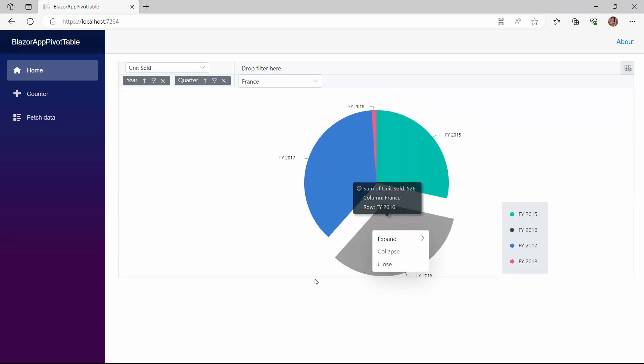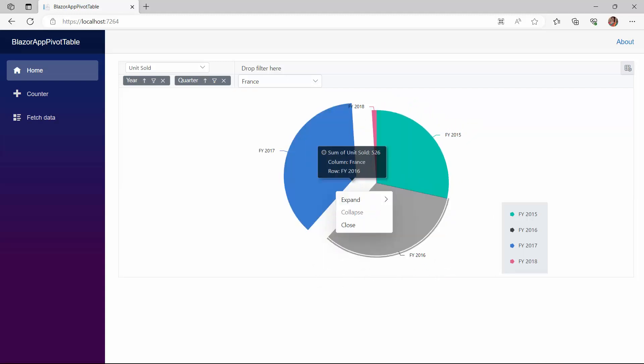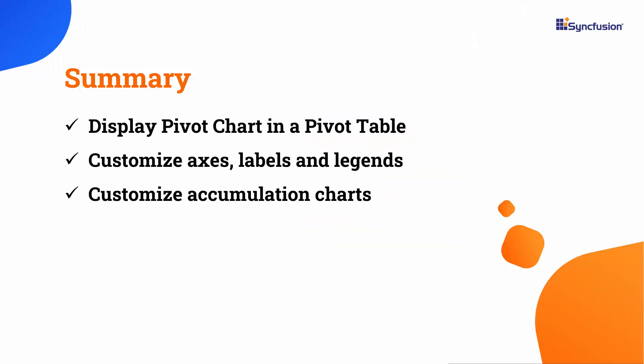In this video, you have seen how to display the pivot chart. You also saw how to customize the axes, data labels, and legends. Lastly, you saw how to display and customize accumulation charts. If you would like to see a working example, you can download it from the GitHub link in the description below. I have also provided a link where you can see if you qualify for a free license key to use our Blazor products through our community license. If you found this video useful, do like the video and subscribe to our channel. Thanks for watching.